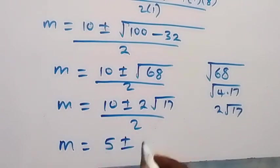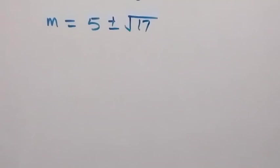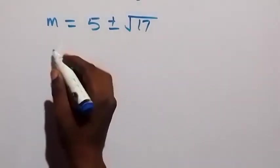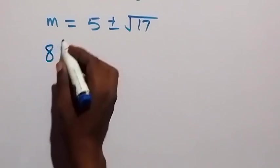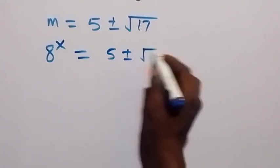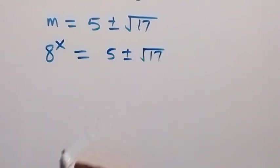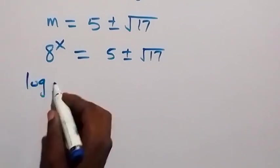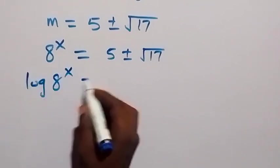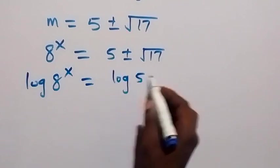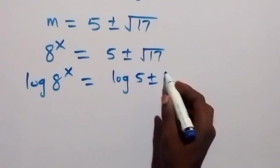Recalling that M equals 8 raised to power x, we have 8 raised to power x equals 5 plus or minus root 17. Taking log on both sides, log of 8 raised to power x equals log of 5 plus or minus root 17.